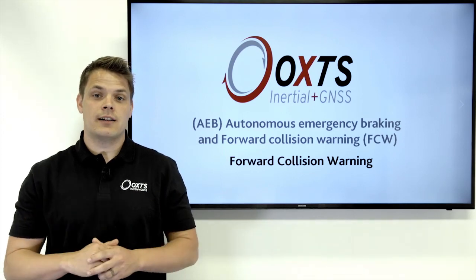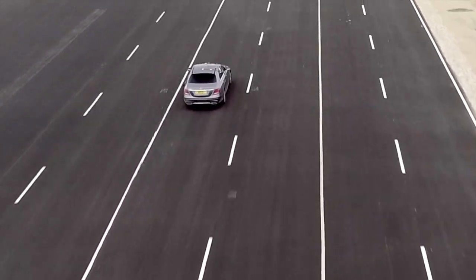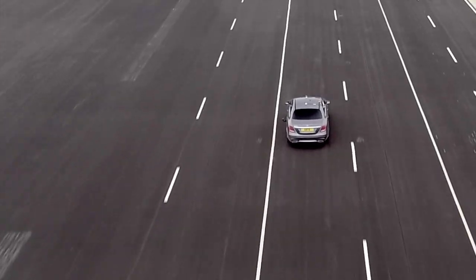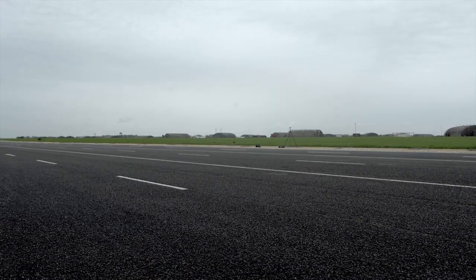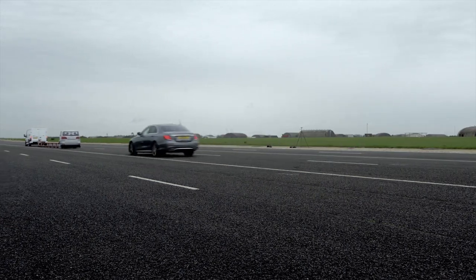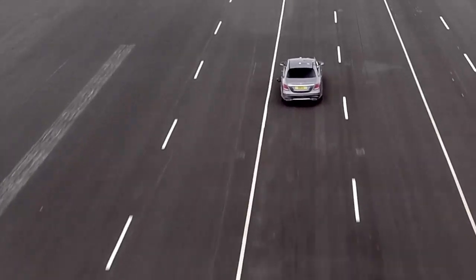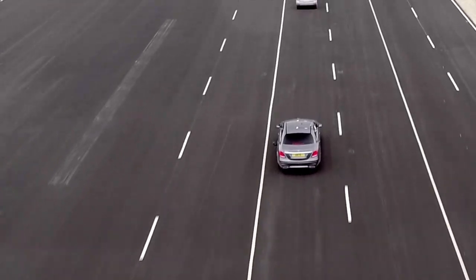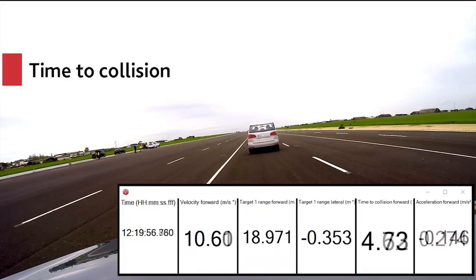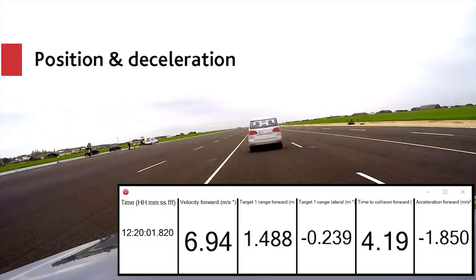RT Range is calculating all of this data in real time. The system that we're validating is the emergency braking. The hunter drives at a fixed and constant speed, and the target — a soft target being towed by a vehicle — starts to brake at a specified deceleration rate. The hunter vehicle is tracking the target, and as it brakes we're measuring time to collision as the hunter approaches the target, then measuring position and deceleration during that braking manoeuvre.